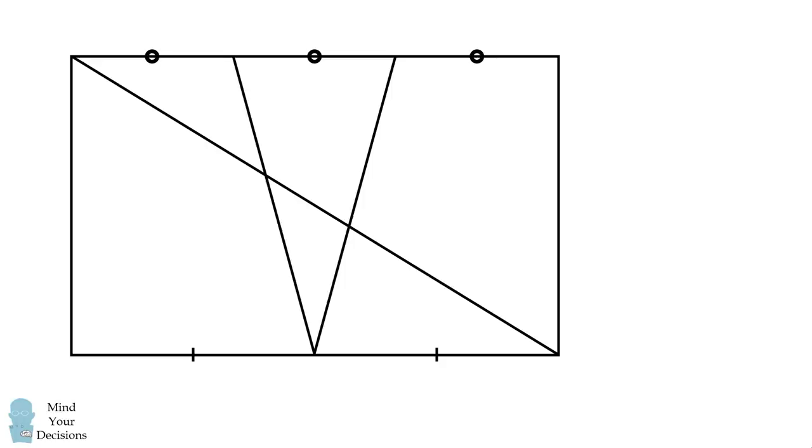I will present one way to solve this problem. Suppose the rectangle has a height equal to H and a side length equal to S. Then the bottom side is divided into two lengths of S over 2, and the top side is divided into three lengths of S over 3.